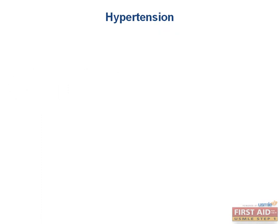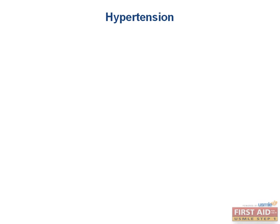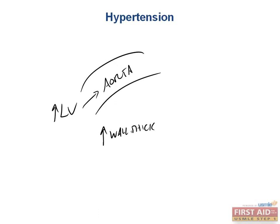Anytime we have higher pressure in our system, whoever's job is to pump against it will be stressed first — that's the left ventricle. Chronic high pressures put work and stress on the left ventricle, which must work very hard to contract against elevated pressures. Recall Laplace's law: an increase in left ventricular pressure pumping against high systemic pressure, particularly in the ascending aorta, requires increased wall thickness to relieve wall stress. This also provides increased contractile force by adding sarcomeres in parallel — concentric hypertrophy.